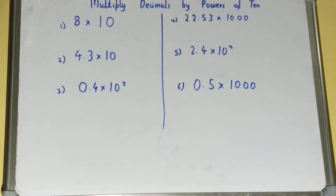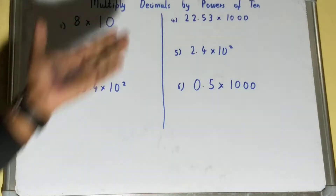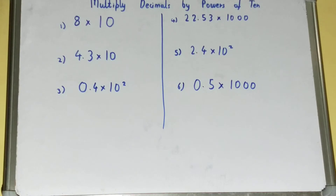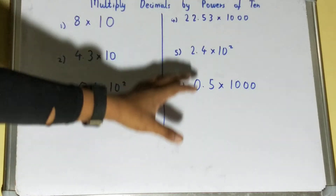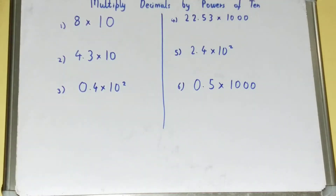Hello friends! In this video I'll be helping you with how you can multiply decimals by powers of 10 — that is 10, 100, 1000, and so on. The multiplication is very easy and you don't have to worry too much; you will solve it in a matter of seconds if you know the concept. Let's start with the problems — I've got a few problems with which you will be fully clear with the concept.